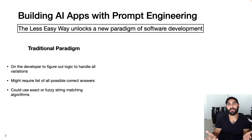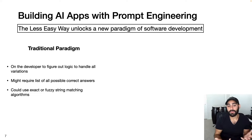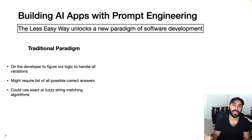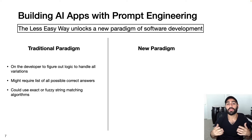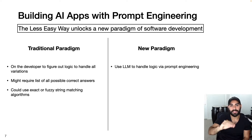First, the traditional paradigm — how programming has always been done. Here it's on the developer to figure out the logic to handle all the variations and edge cases. This might require the user to input a list of all possible correct answers, which is hard when you can't anticipate every possible student response. Traditionally, you'd use some kind of exact or fuzzy string matching algorithm. Now let's look at the new paradigm where we incorporate large language models into the logic of our software — you can use an LLM to handle all the logic of this automatic grading task using prompt engineering.